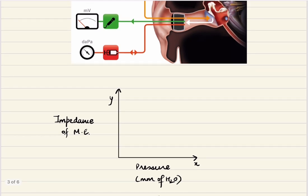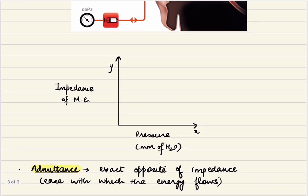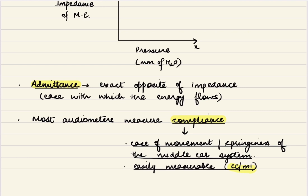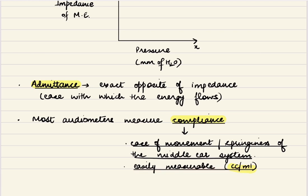However, it is easier to measure the admittance of the middle ear. Admittance means the exact opposite of impedance — impedance means resistance to flow, and admittance means ease with which energy flows. It is even easier to measure the compliance of the middle ear. Admittance is indirectly measured through compliance, and compliance is the ease of movement or springiness of the middle ear system. This is easily measurable in milliliters, and most audiometers now measure compliance in milliliters.